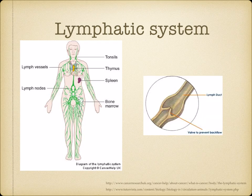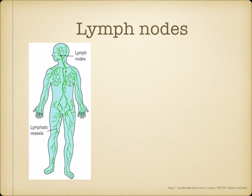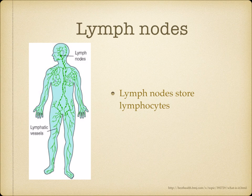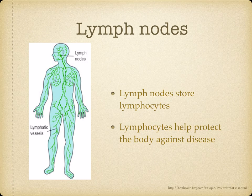Lymph vessels are similar to veins because they have valves that ensure one-way flow. At points along the lymph vessels are lymph nodes, which store lymphocytes. As lymph passes through these nodes, lymphocytes and proteins are added to it. Lymph nodes filter out any bacteria or foreign material, which are then engulfed by phagocytes, so the lymphocytes inside help protect the body against disease.